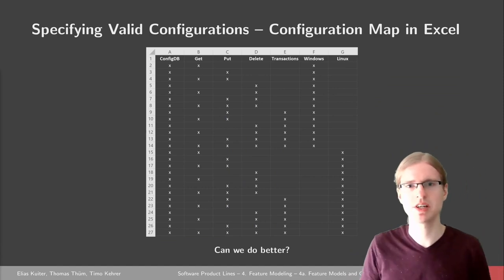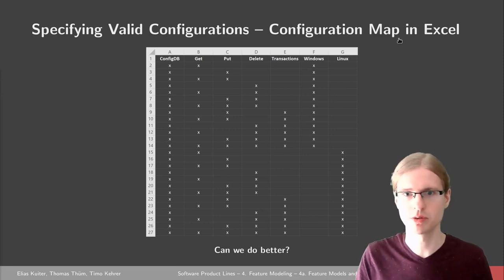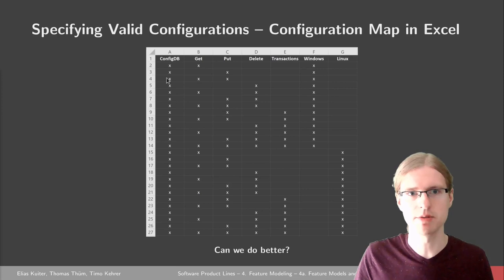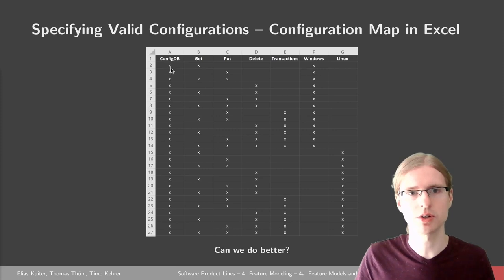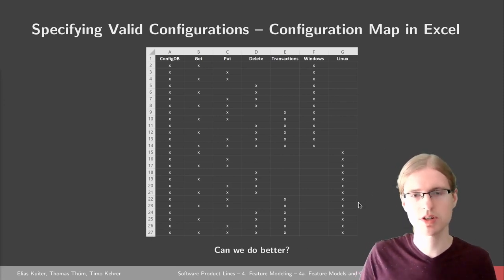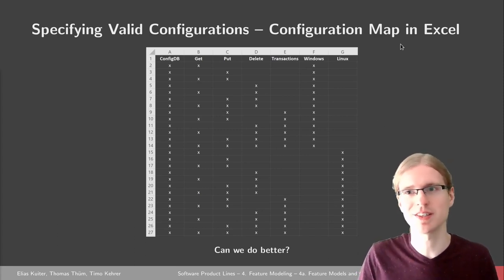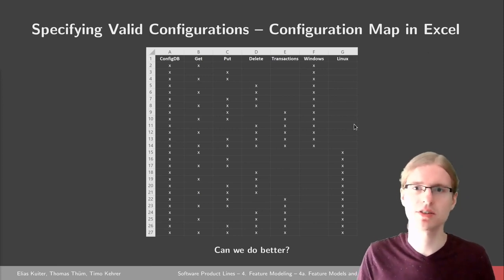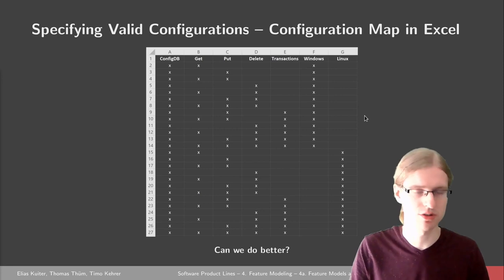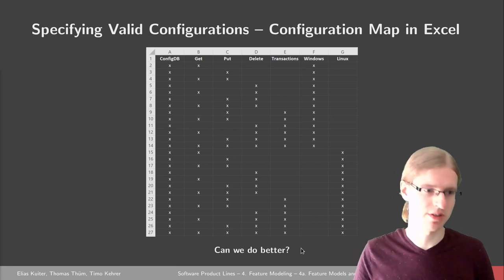What you see in practice usually amounts to something like this — an Excel sheet that is basically the configuration matrix as a table. There is one column for each feature and an X means the feature occurs in this product, with each row representing one product. This is not a very structured way to do things, but it is done in industry because Excel is widely available and everyone understands the tool. Still, we might ask: is there no better way to do this? And there actually is.